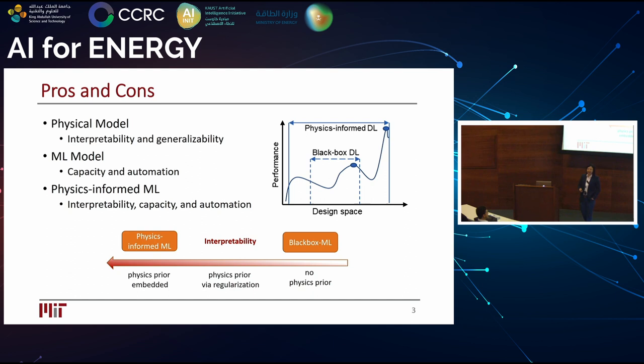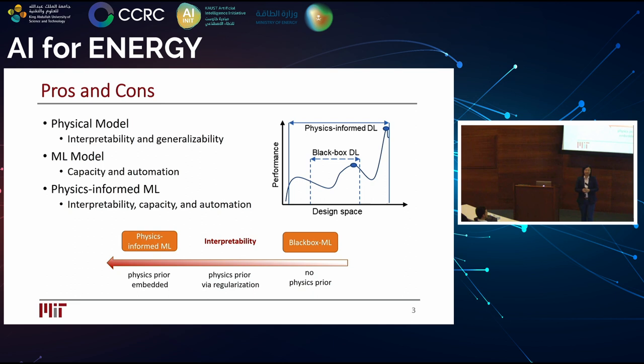We take a look at the pros and cons of both physics-based modeling and black-box machine learning. For physical models, we can interpret the underlying physics, know what's important, and even out of the validated conditions, we expect relatively high fidelity because of the embedded physics. For machine learning, it helps us deal with large quantities of data. The question is how we can get the merit of both.